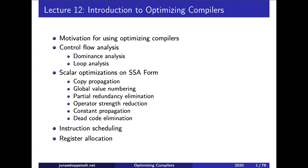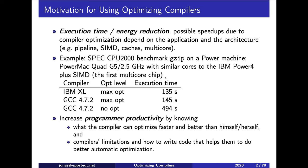In this lecture I will introduce optimizing compilers. The purpose is not to explain how they optimize code, but instead what they can optimize. With that knowledge we can write code which is fast but avoid changing the source code with low-level optimizations that the compiler can do automatically.